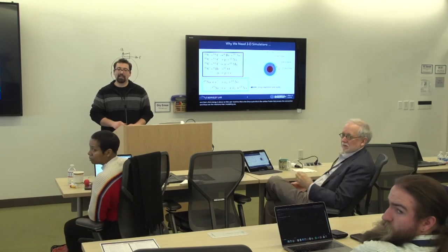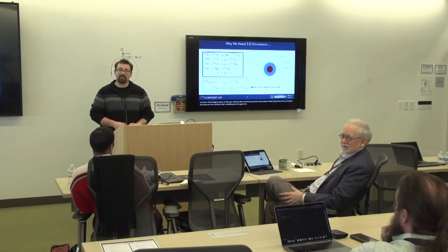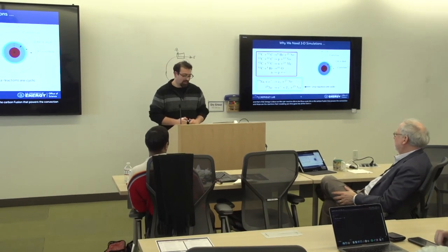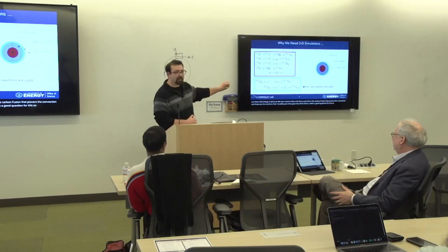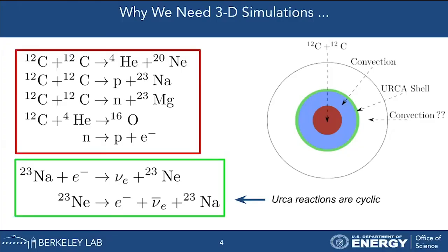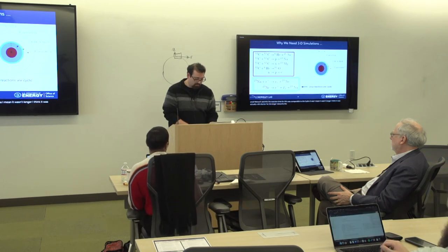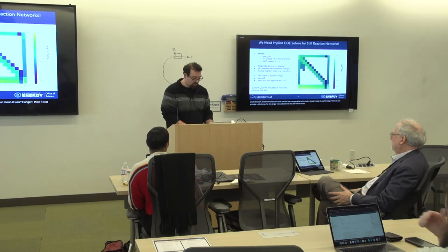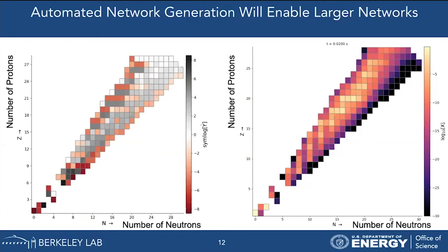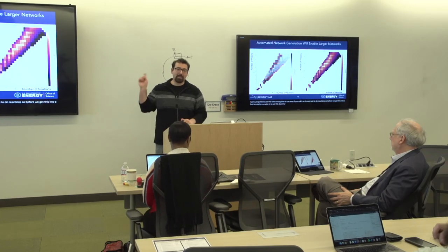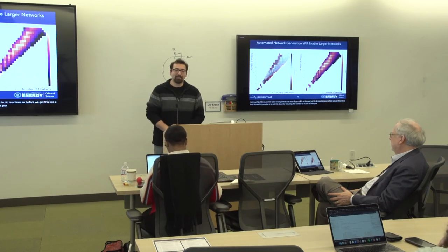Question: For big networks, what fraction of time goes into evolving the nucleosynthesis? For the small network used here, the reaction time was comparable to the hydro — actually a bit shorter. For the larger rp-process network, we haven't actually run it together with hydro yet, because it takes a long time to run even on its own. Before getting this into a fluid simulation, the plan is to cut this down by reducing the number of nuclei.